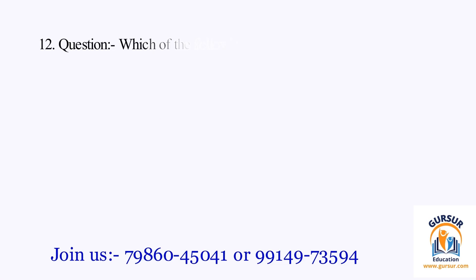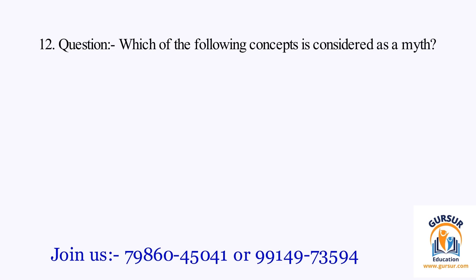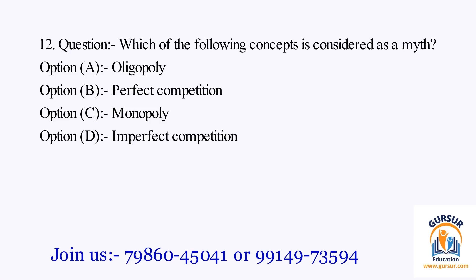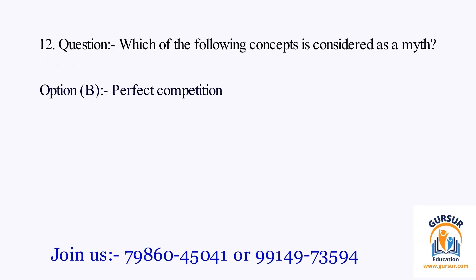Question number 12. Which of the following concepts is considered as a myth? The option A is Oligopoly. The option B is Perfect Competition. The option C is Monopoly. The option D is Imperfect Competition. The right answer is Option B, that is Perfect Competition.